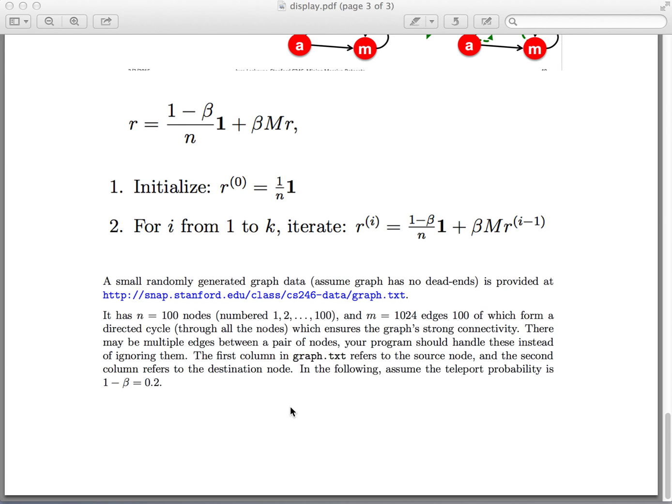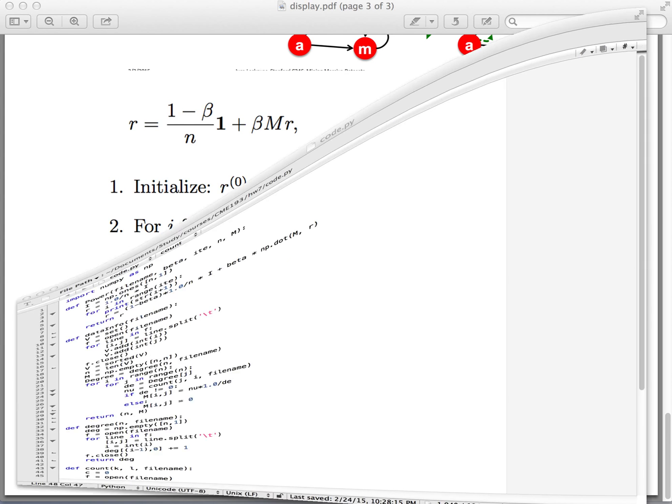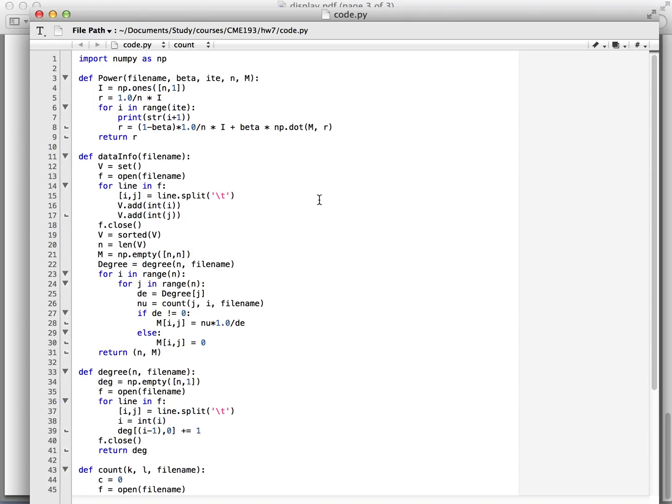We will use Python to implement this. First, we need to import numpy as np. Then we define the function power. The input arguments include the filename, beta, number of iterations, number of vertices, and the transition matrix M. We first initialize r and then do iter times to update r using the transition equation.